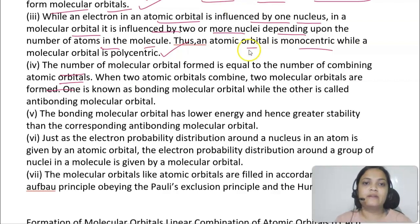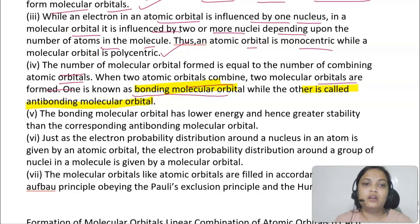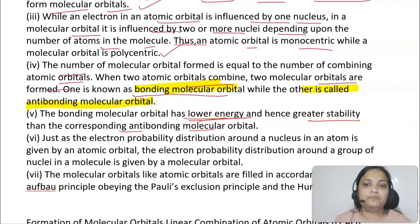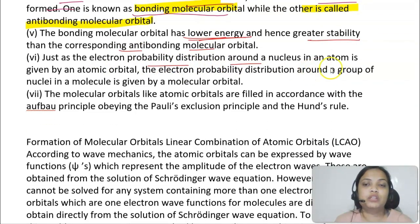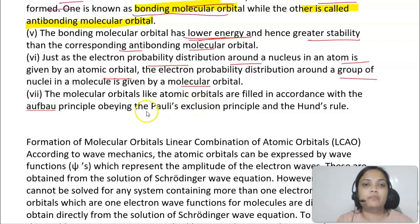When two atomic orbitals combine, two molecular orbitals are formed: one bonding molecular orbital (lower energy, greater stability) and one anti-bonding molecular orbital (higher energy, less stability). Just like electron probability distribution around a nucleus is given by atomic orbitals, electron probability distribution around nuclei in molecules is given by molecular orbitals. Molecular orbitals are filled in the same way as atomic orbitals, following Aufbau's principle, Pauli's exclusion principle, and Hund's rule.